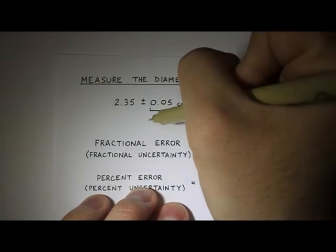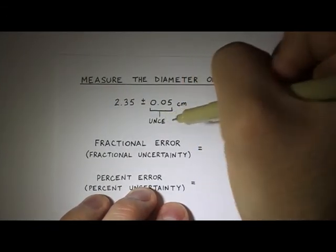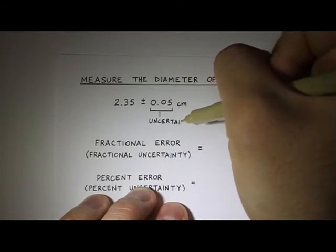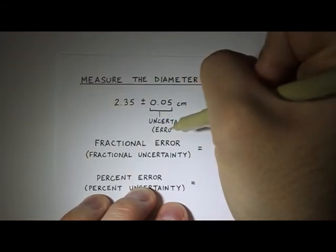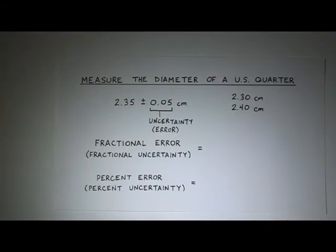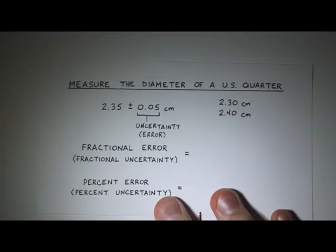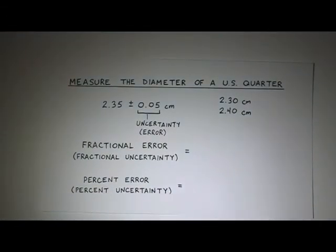Some people also use the term error to describe uncertainty. So I'll put that in also. And a good way to describe the uncertainty is to look at the fractional uncertainty. In other words, compared to the actual measurement, what is the error? I mean, is the error very small compared to the size of the measurement or very large?